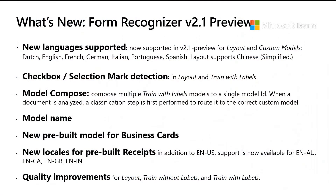We also added model compose, which lets you compose multiple different models that you've trained so you can call them with a single ID. We'll do a classification step to figure out which model applies at prediction time. Additional updates include support for friendly model names, a new pre-built model for business cards, new locales for pre-built receipts, and big quality improvements across the different operations.